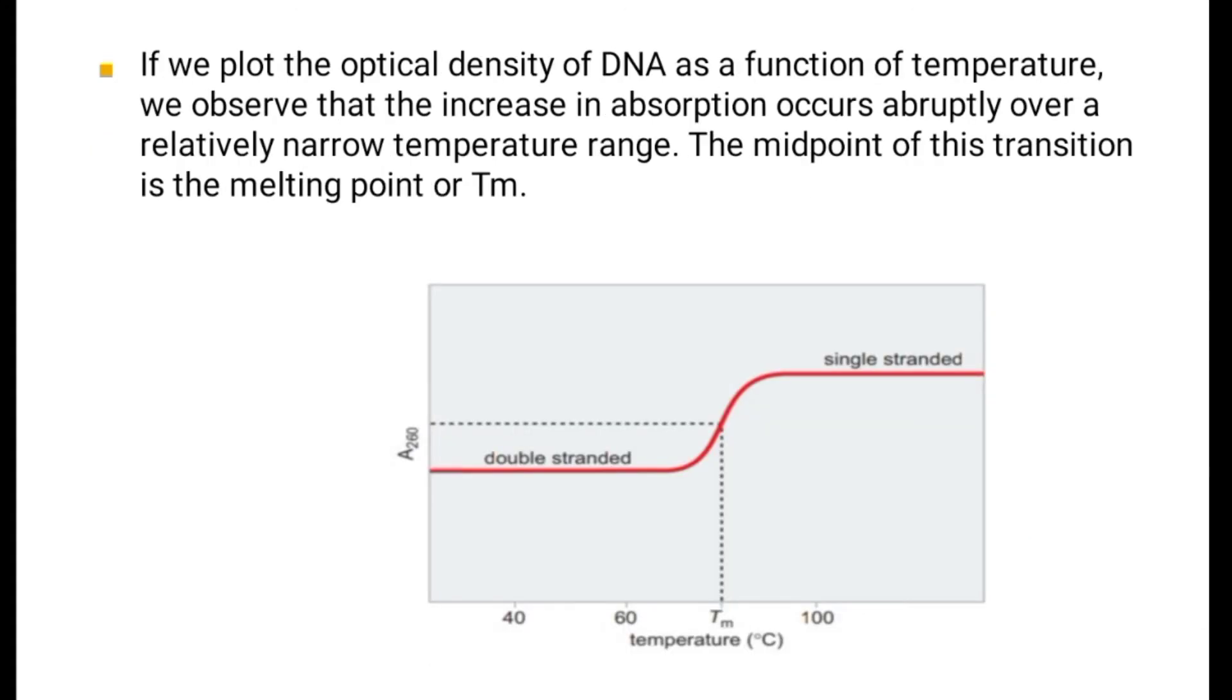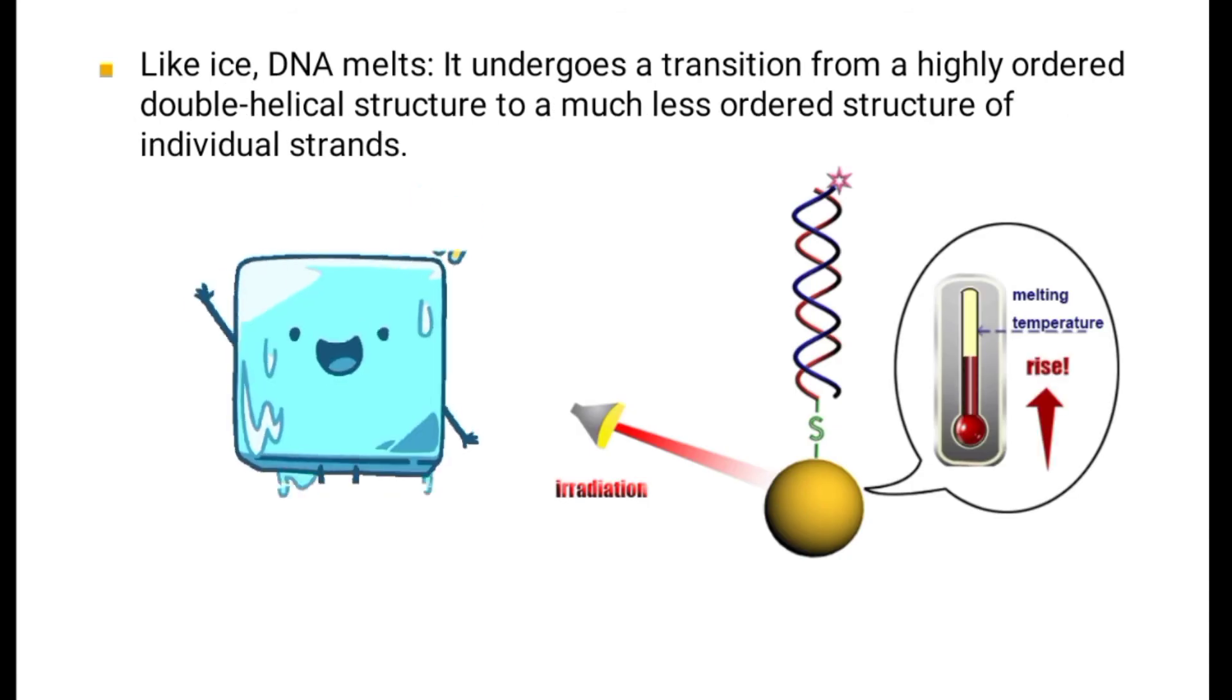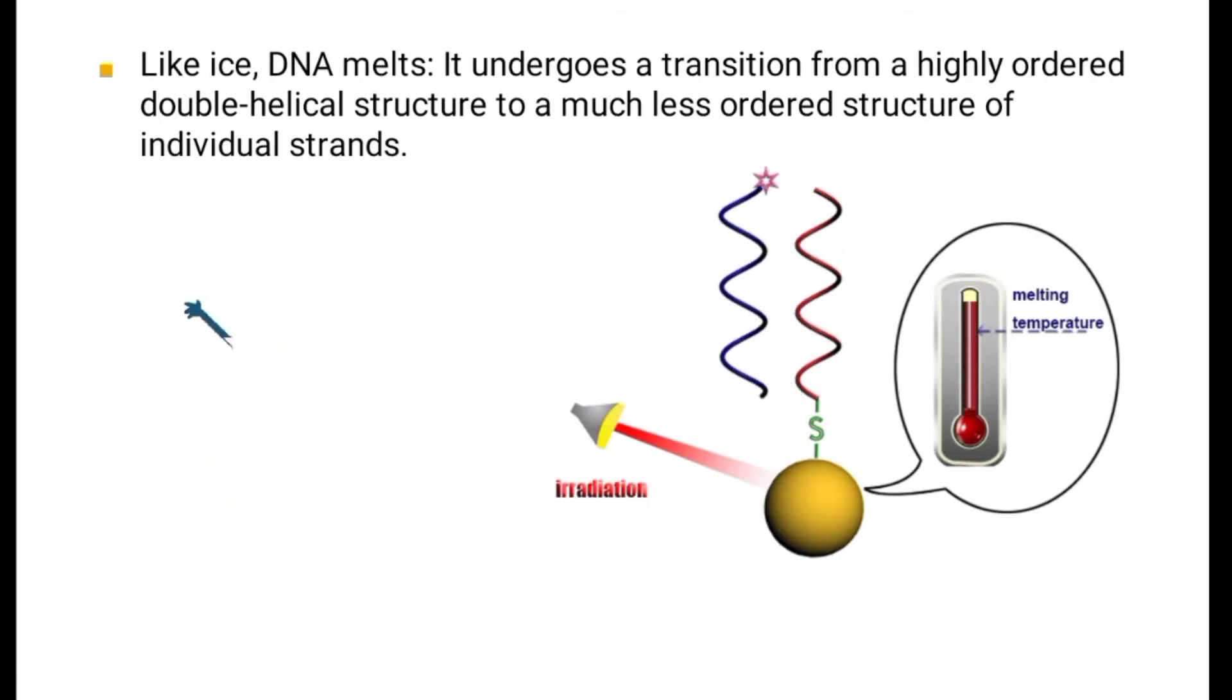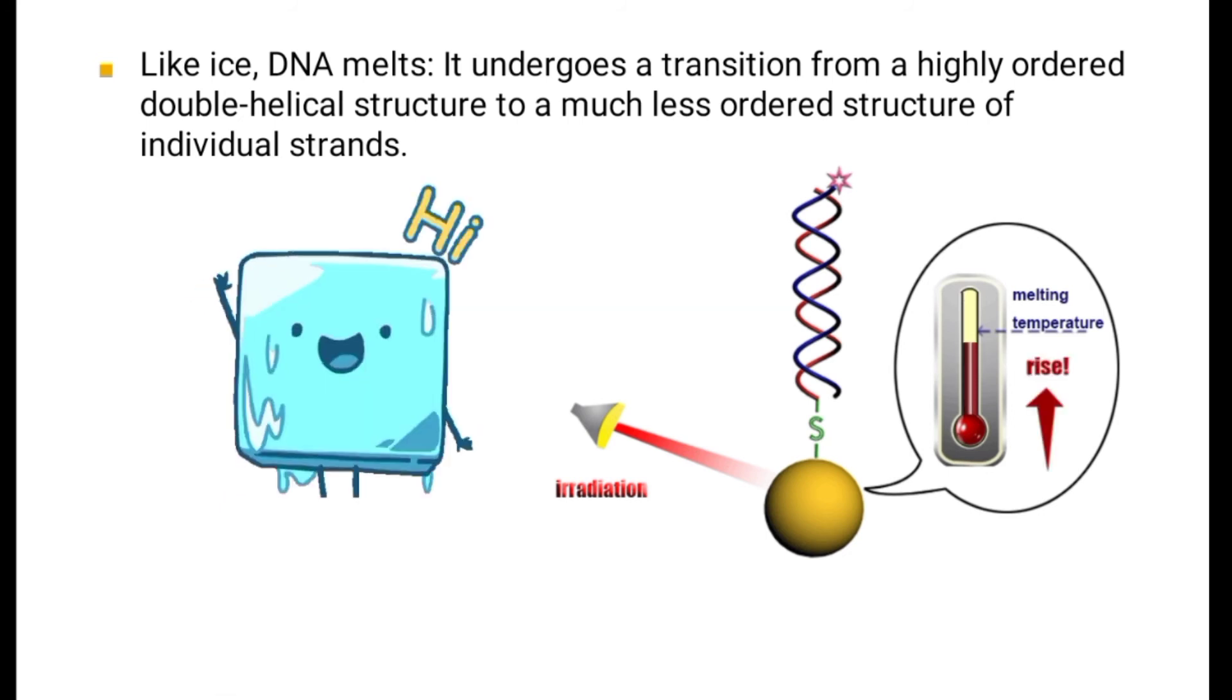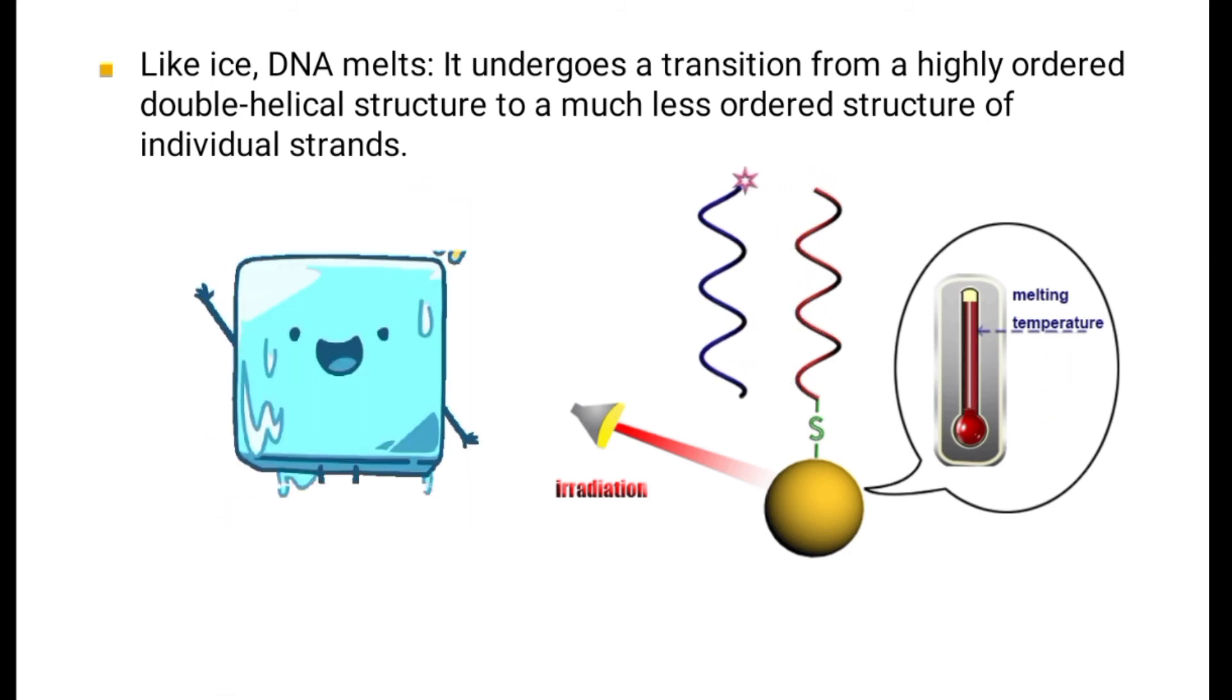If we plot the optical density of DNA as a function of temperature, we observe that the increase in absorption occurs abruptly over a relatively narrow temperature range. The midpoint of this transition is the melting point or Tm. Like ice, DNA melts; it undergoes a transition from a highly ordered double helical structure to a much less ordered structure of individual strands.